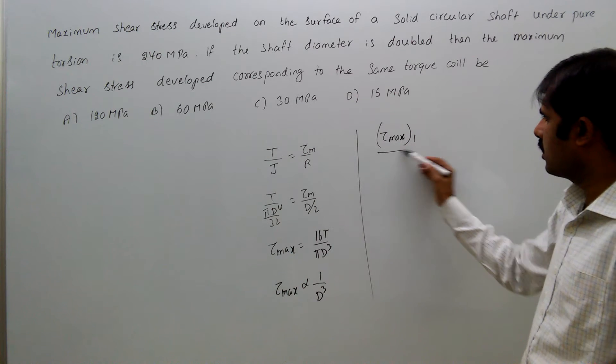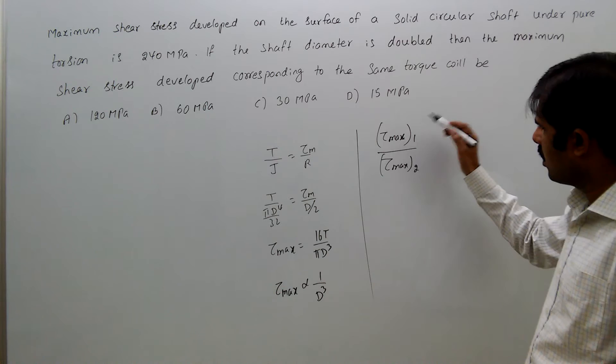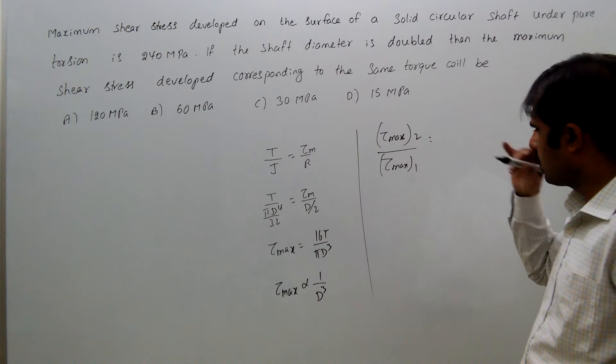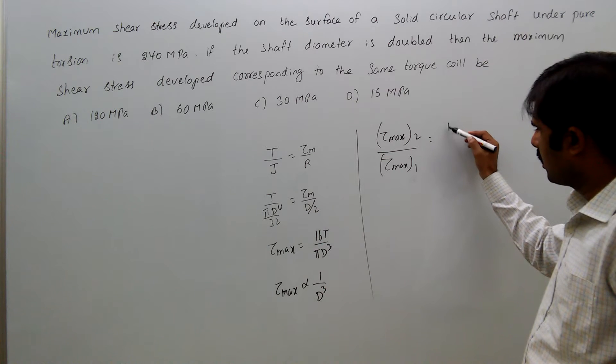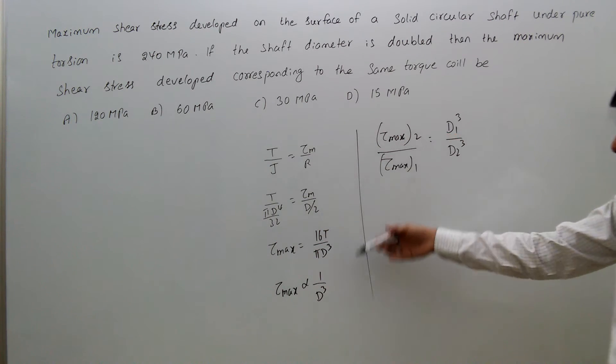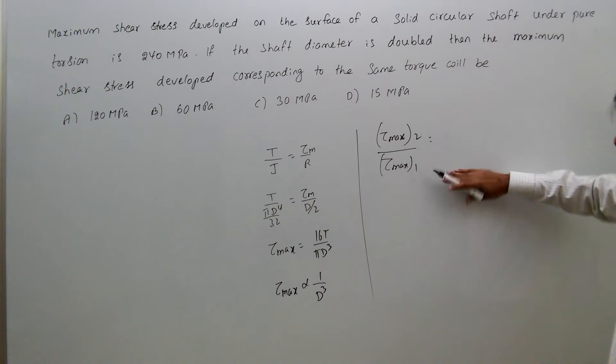So, tau max 2 by tau max 1 equal to d1 cube by d2 cube, because of this universal relation.